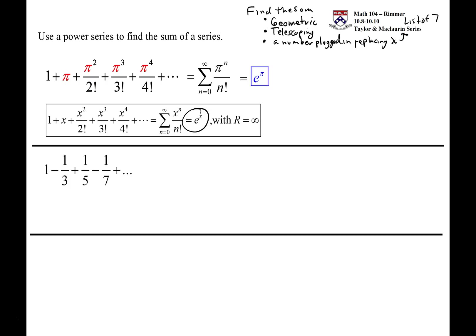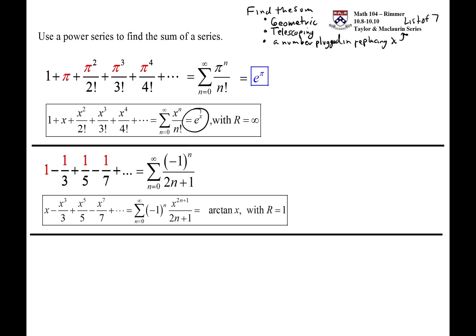Next up, we have 1 minus 1/3 plus 1/5 minus 1/7, and what we recognize is that there are no factorials, it does alternate, but only the odd terms are present. And that's going to come from the fact that we're looking at arctan.